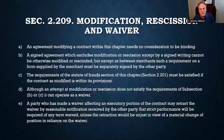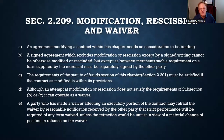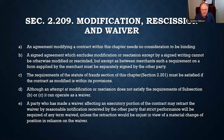One other section to discuss is UCC Section 2-209, which is also different from the common law. We haven't talked much about modification, rescission, or waiver. Modification is what happens after a contract is formed if you want to change it. Once a contract is formed, the terms are set — that's why it's so important to understand when an agreement was made, because those become the terms of the contract.